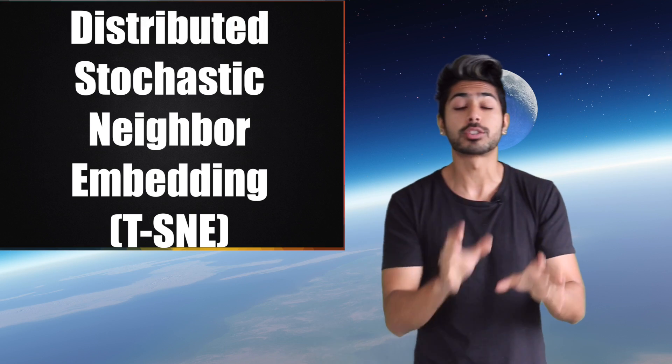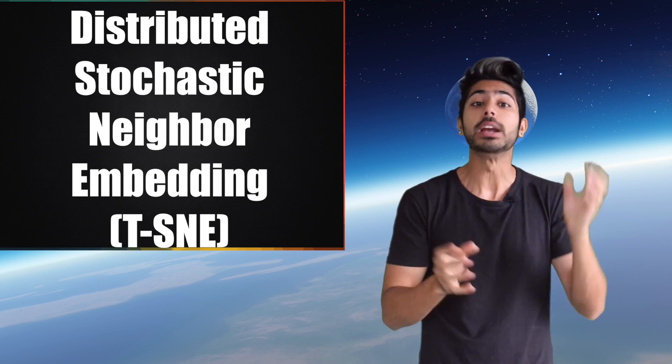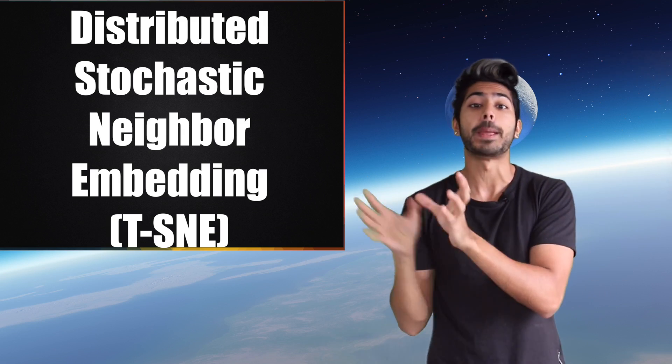One of the most popular ways to do this is called t-SNE, which stands for Distributed Stochastic Neighbor Embedding. Say that three times fast.